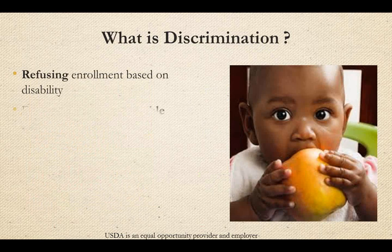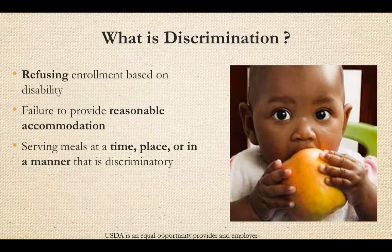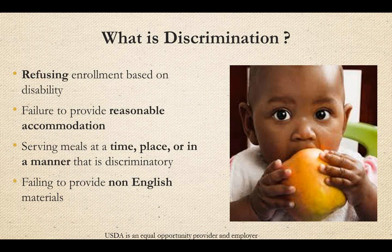A few examples of potential discrimination may be: refusing a person's enrollment in your program based on a disability, failure to provide reasonable accommodation to disabled individuals, serving meals at a time, place, or in a manner that is discriminatory, or failing to provide materials that give non-English-speaking persons full and equal opportunity to receive benefits. Civil rights are in place to protect children and families from being discriminated against while participating in USDA-funded food programs.